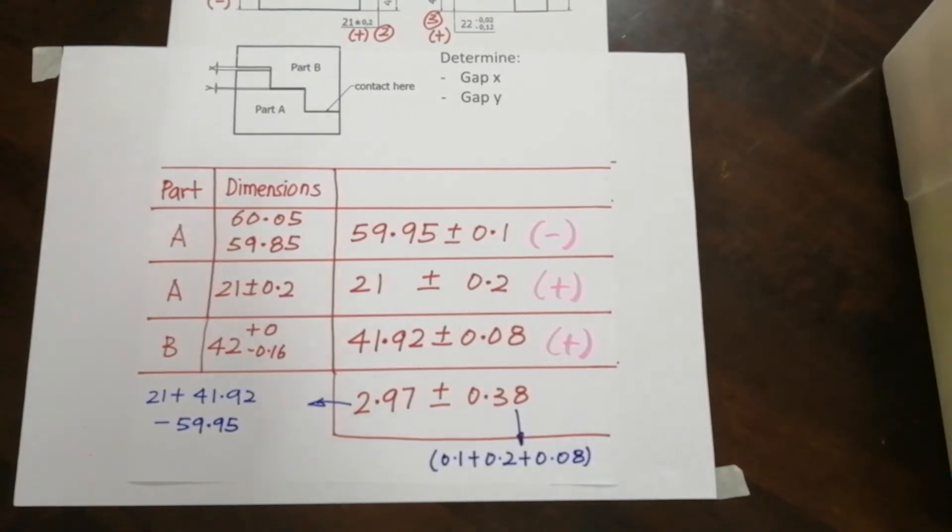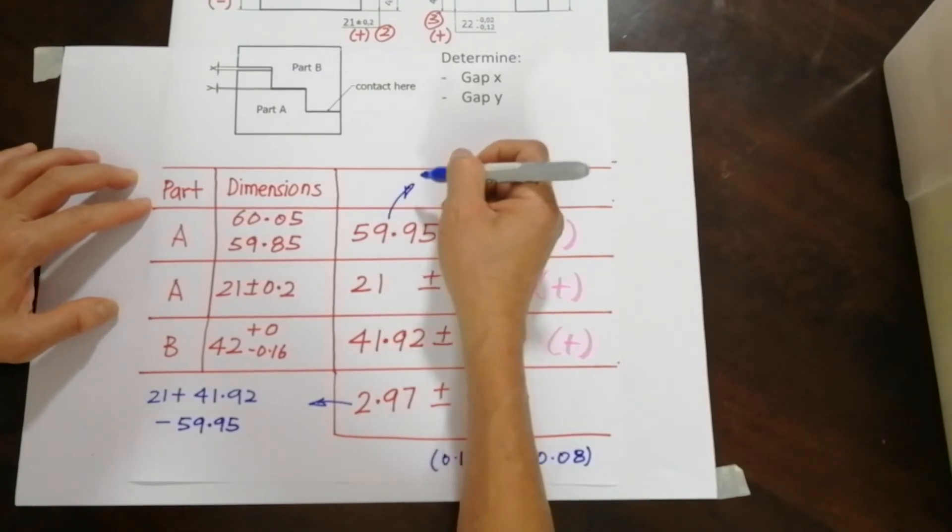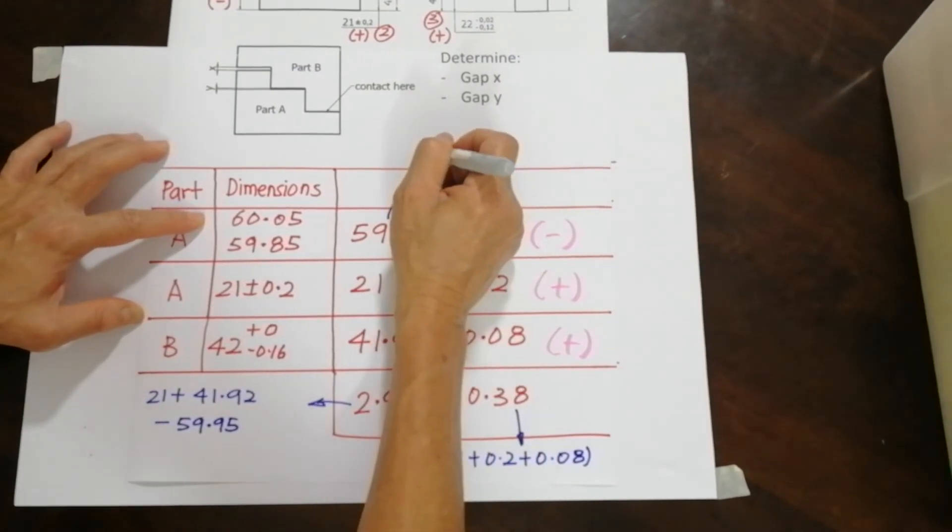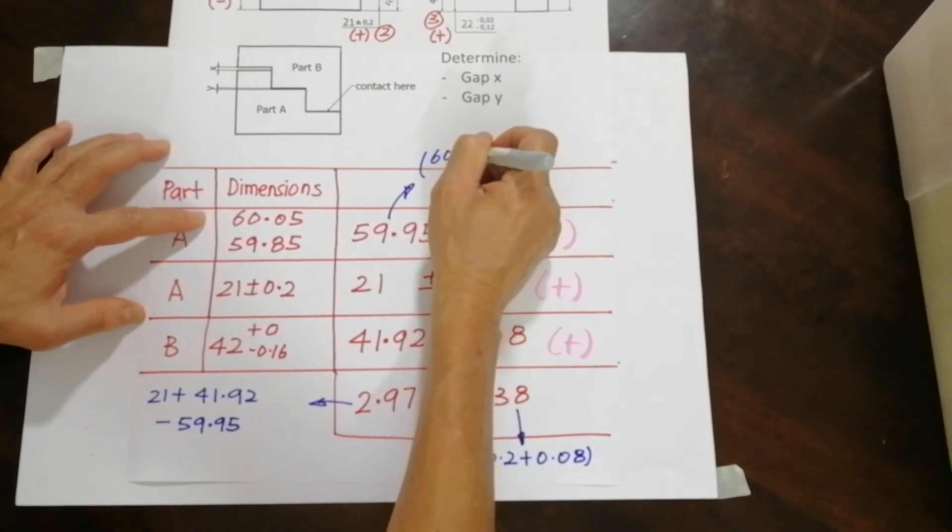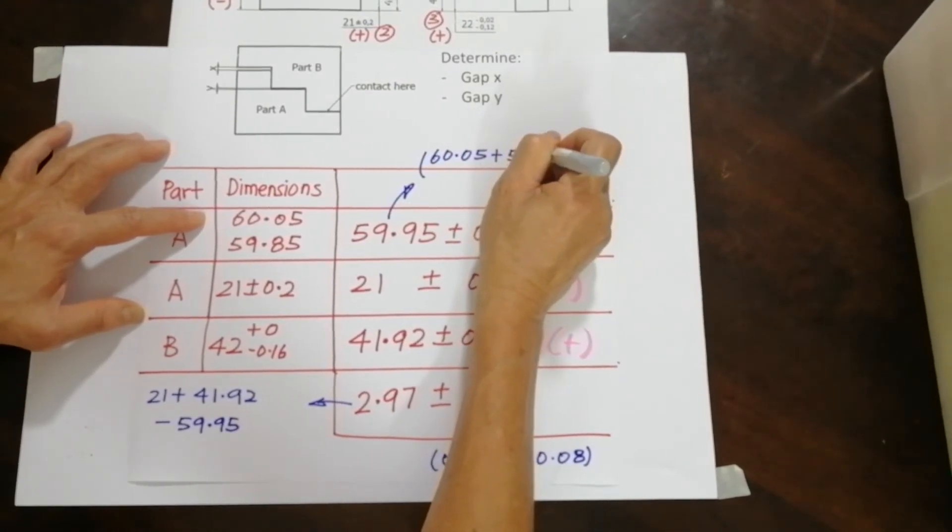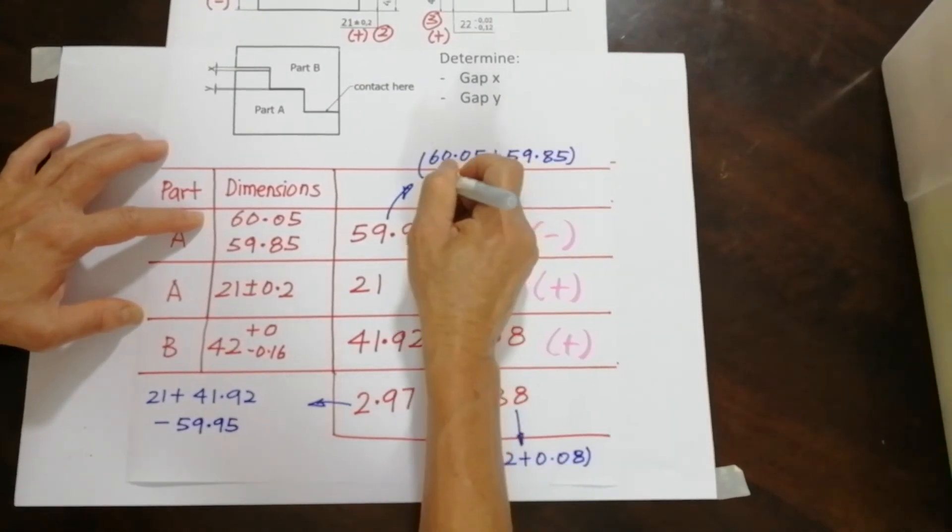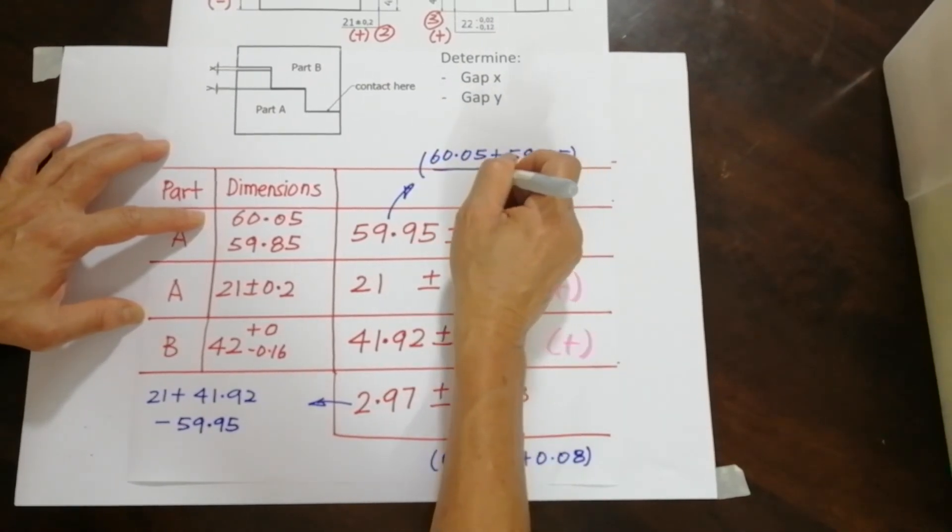So for the tolerance, we just add that all up. Now, how did I get this value? This value is 60.05 plus 59.85 divided by 2.